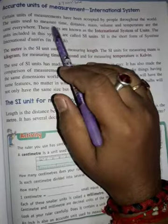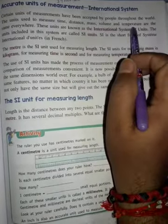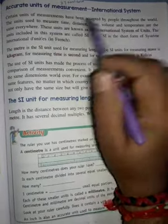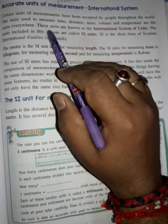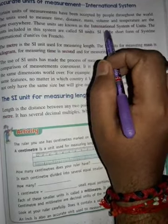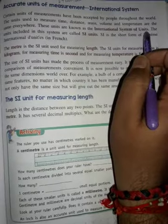The units used to measure time, distance, mass, volume, and temperature are the same everywhere. These units are known as the International System of Units.